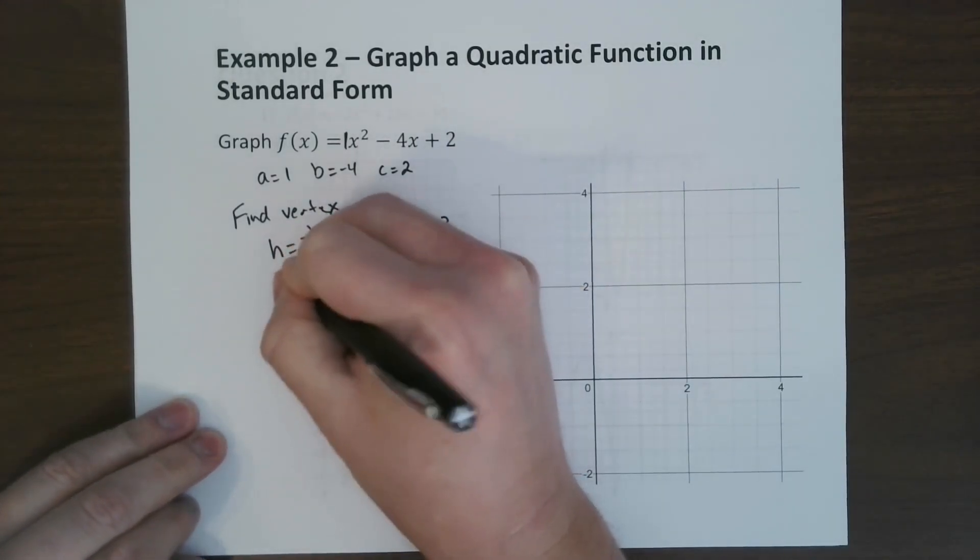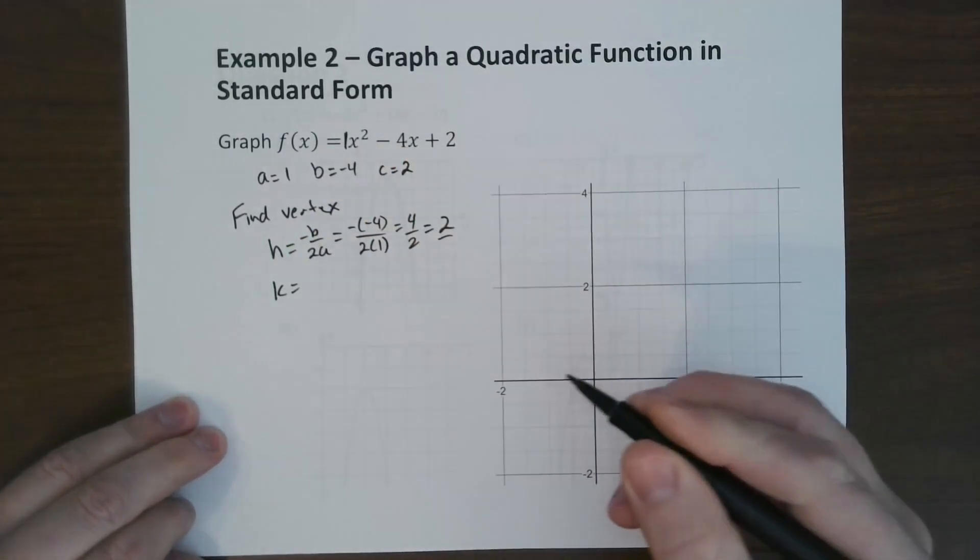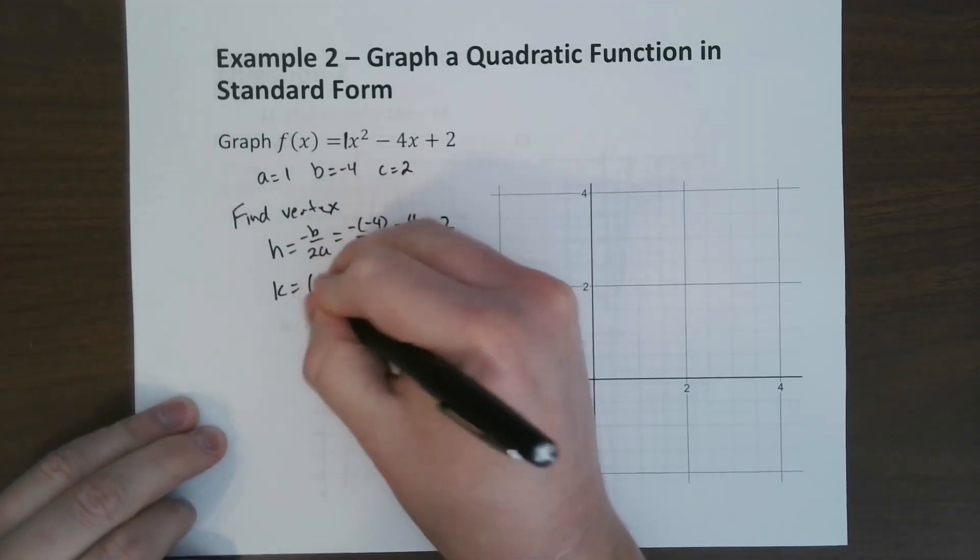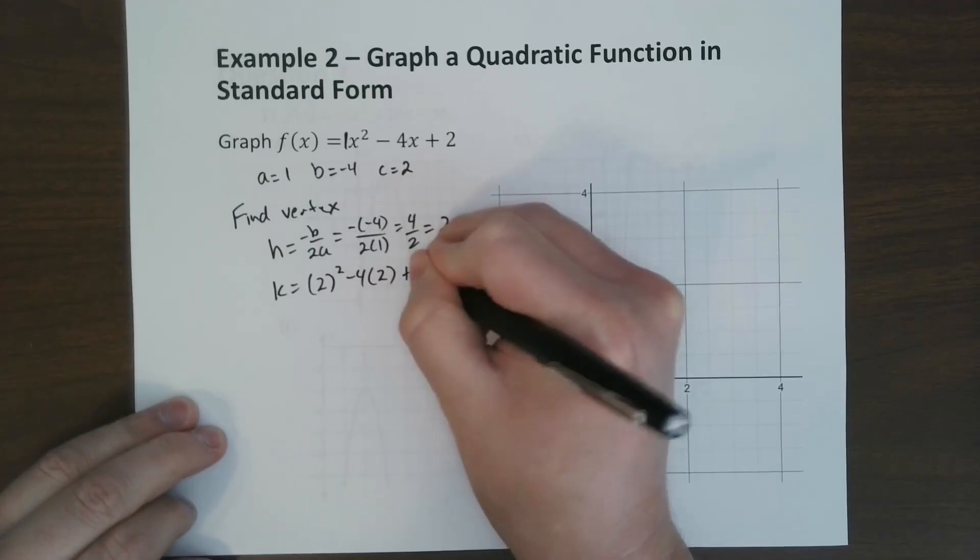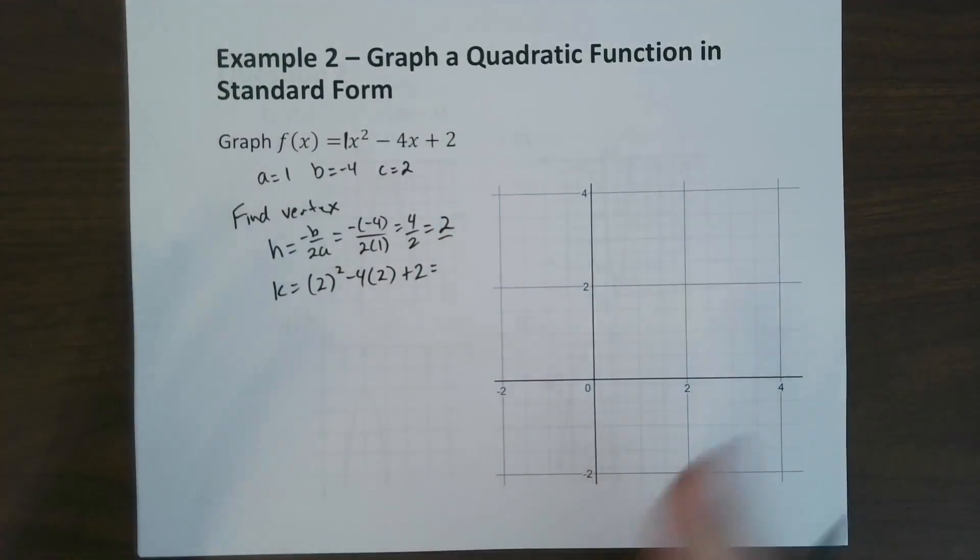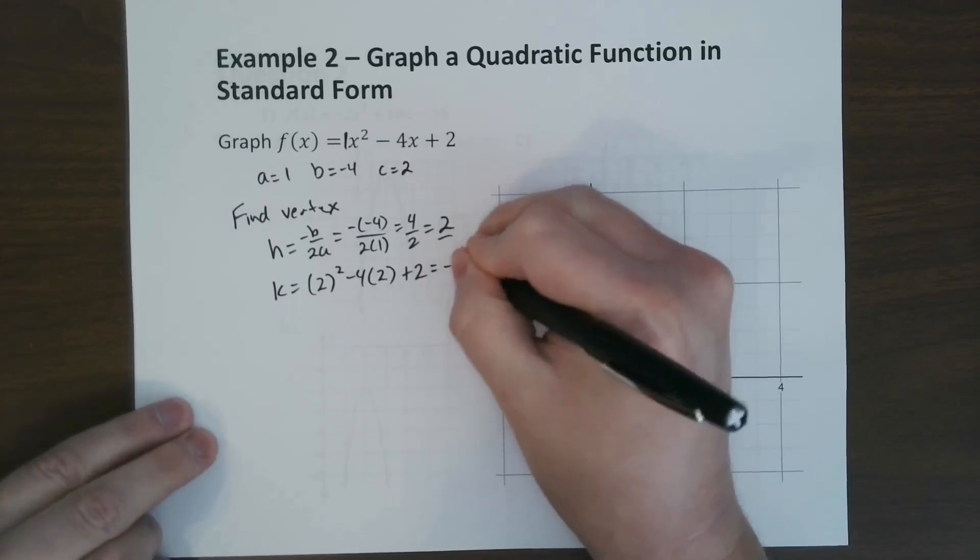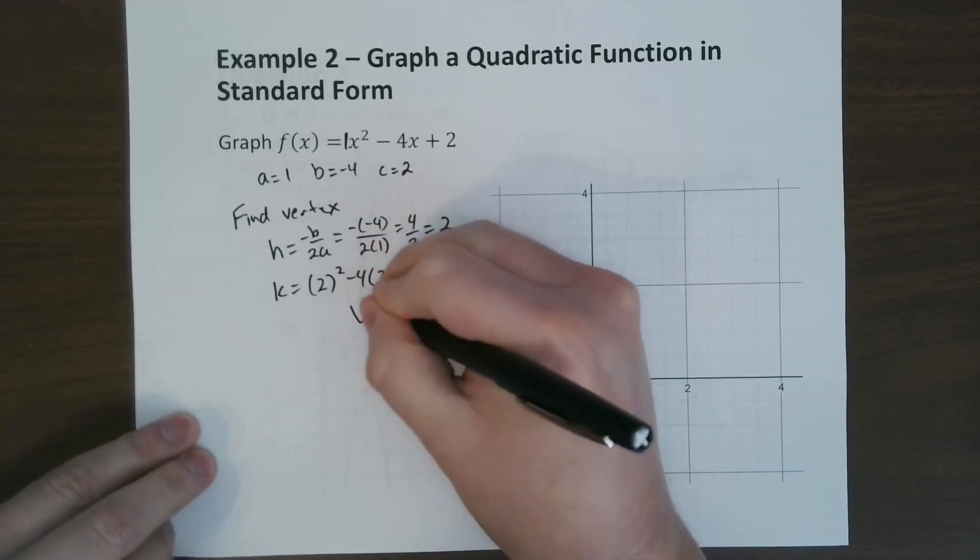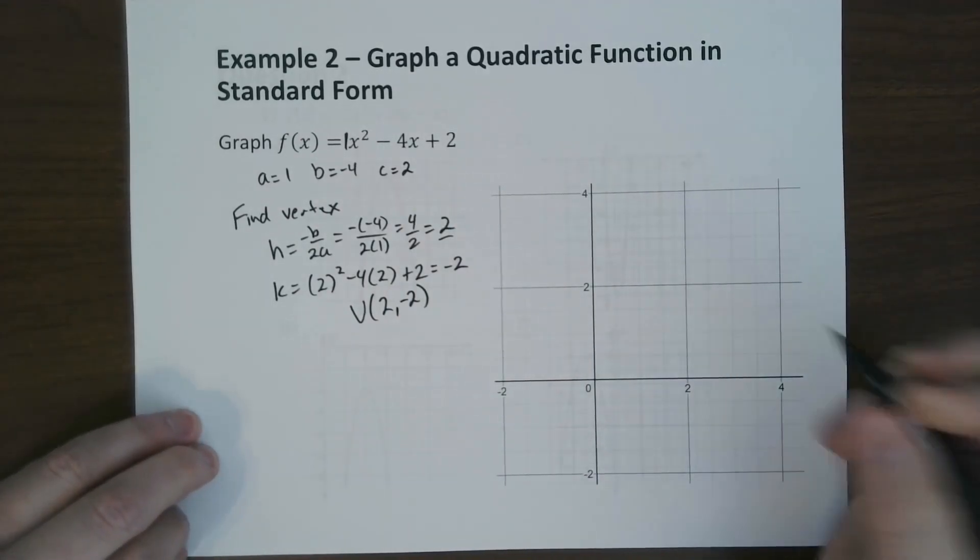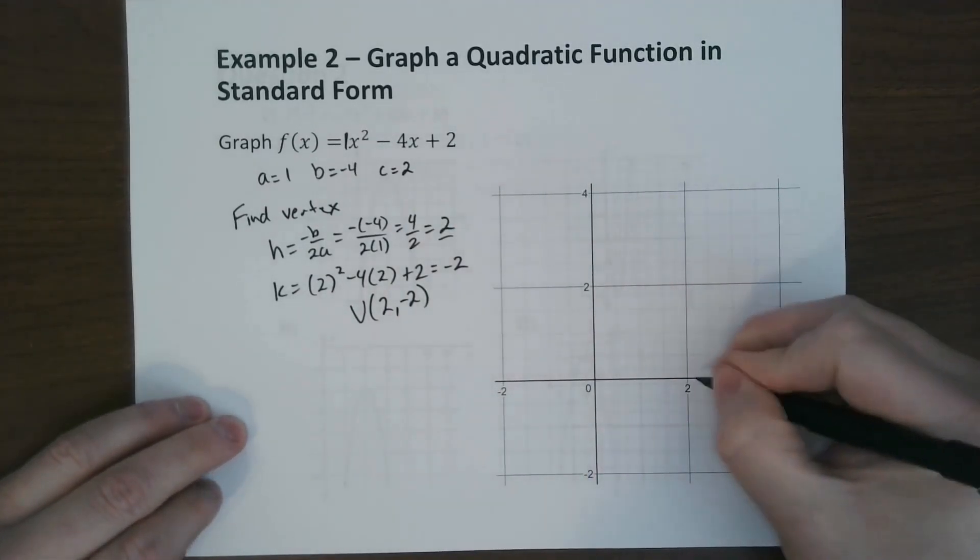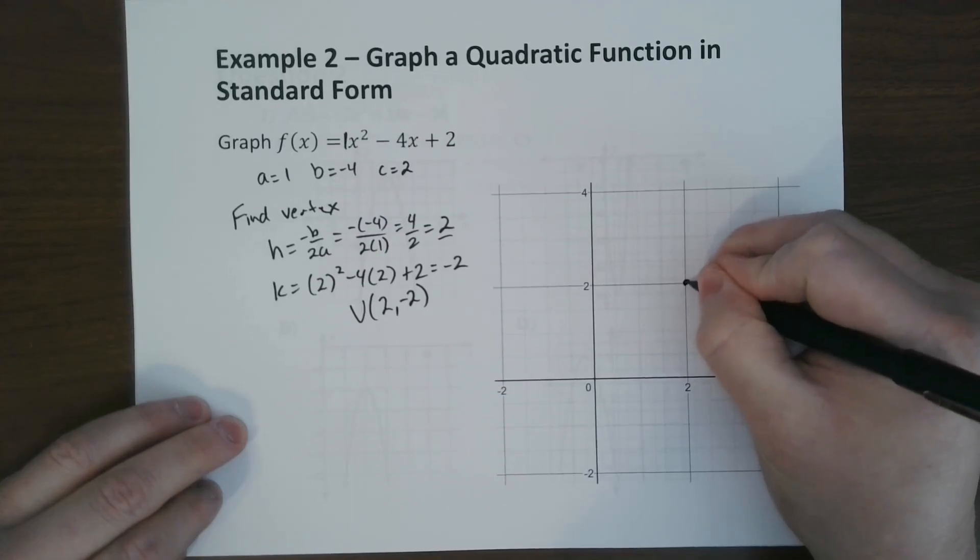To find k, we take this 2 and we plug it into the equation. So we get 2 squared minus 4 times 2 plus 2. Once again, using a calculator, just plug it in real quick, we get negative 2. So our vertex is 2, negative 2. Let's go ahead and graph that on the graph. So over 2, up 2, it's right here.